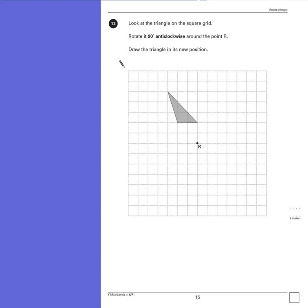Question 13. Look at the triangle on the square grid. Rotate it 90 degrees anti-clockwise around point R. Draw the triangle in its new position.